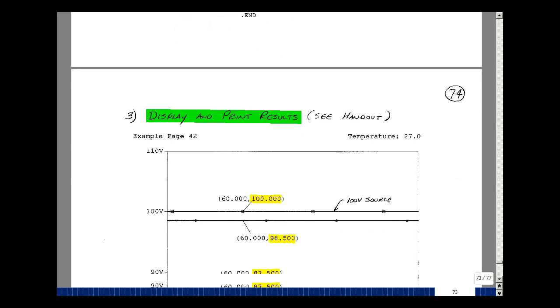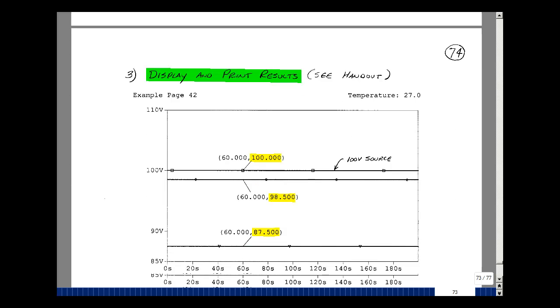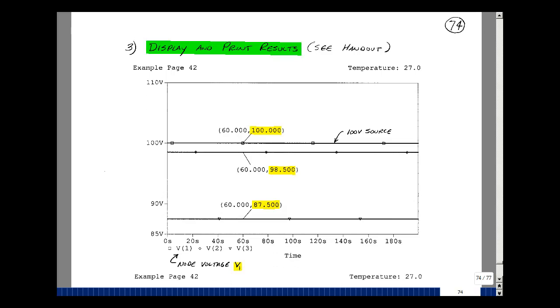The handout also tells you how to print the following pictures. I graphed node voltages 1, 2, and 3. They're marked with different characters. Node voltage 1 was my 100-volt source, and sure enough it's 100 volts. At 60 seconds, I have 100 volts, but I have that for every instant in time. Voltage 2 is 98.5, although we didn't solve for that. And node voltage 3 is 87.5.